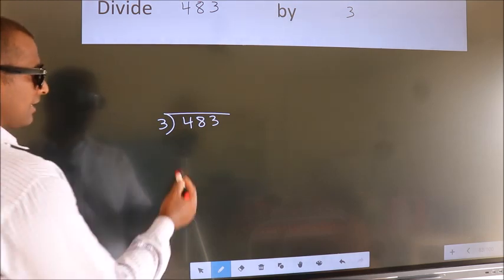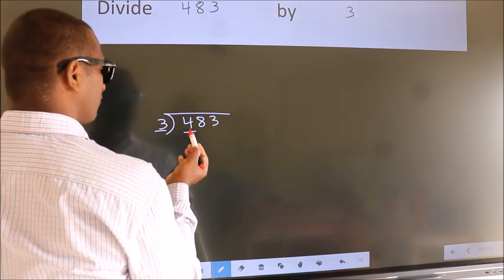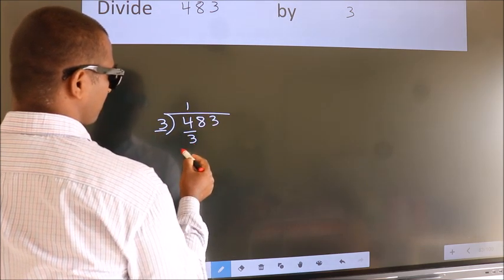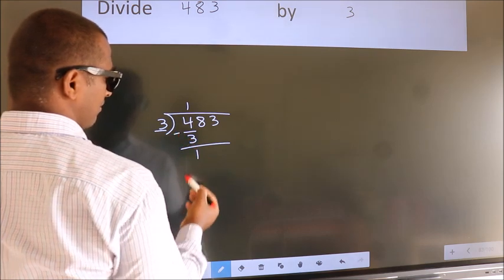Next, here we have 4, here 3. A number close to 4 in the 3 table is 3 once 3. Now we should subtract. We get 1.